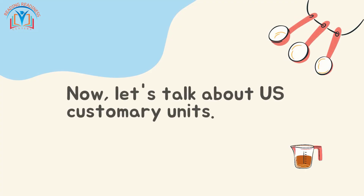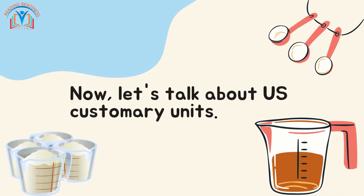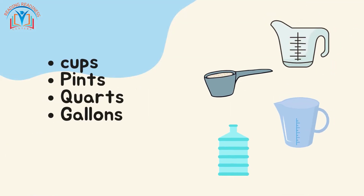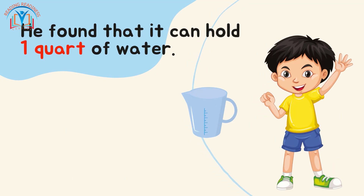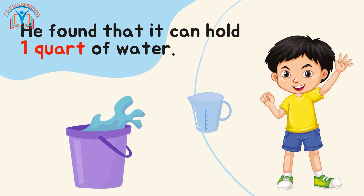Now let's talk about US customary units. In the United States, we use cups, pints, quarts, and gallons to measure volume. Emily decided to use cups to measure her water — she filled up two cups. Max, on the other hand, used a quart container and found that it can hold one quart of water.